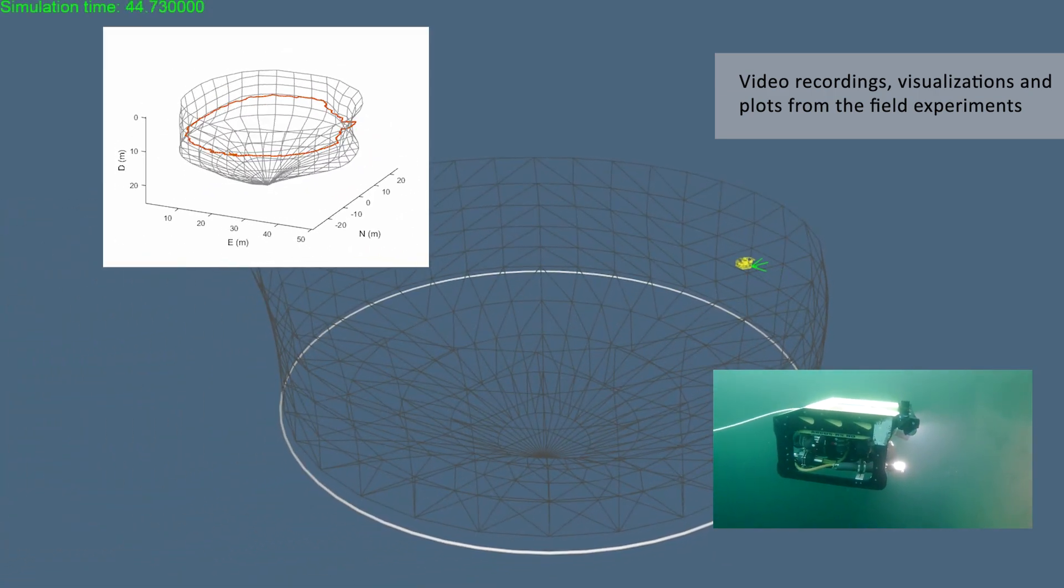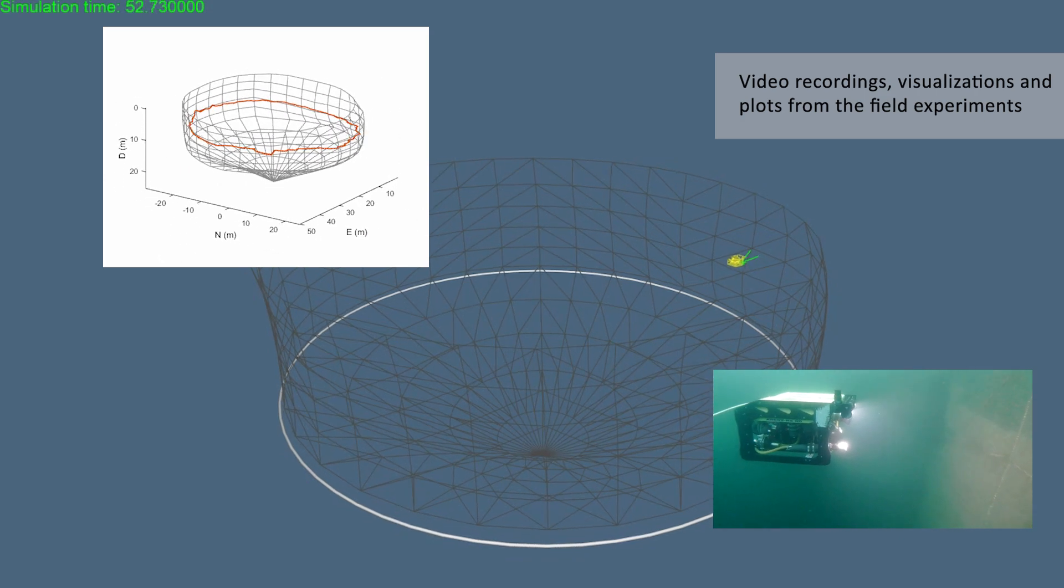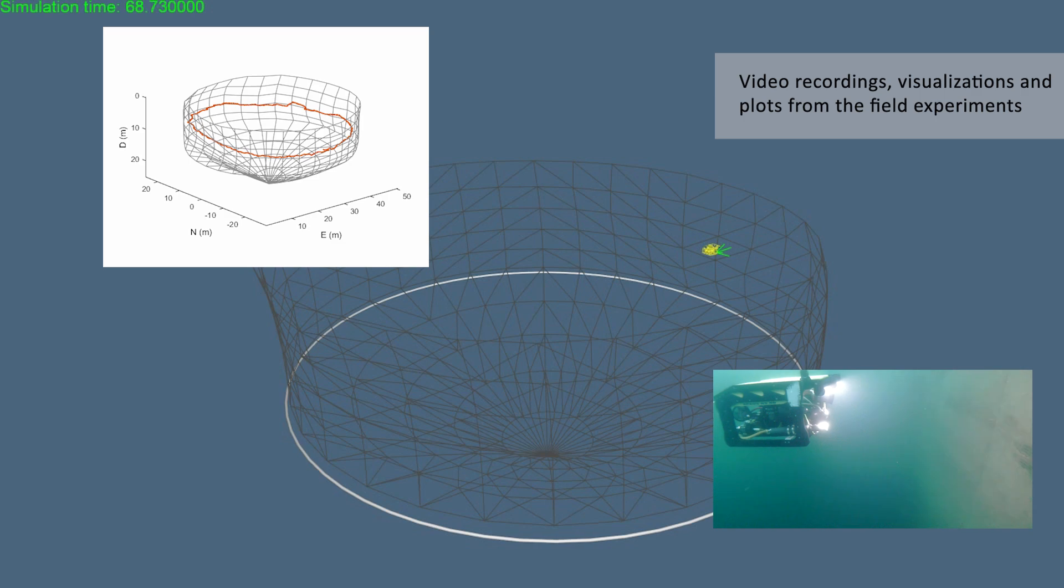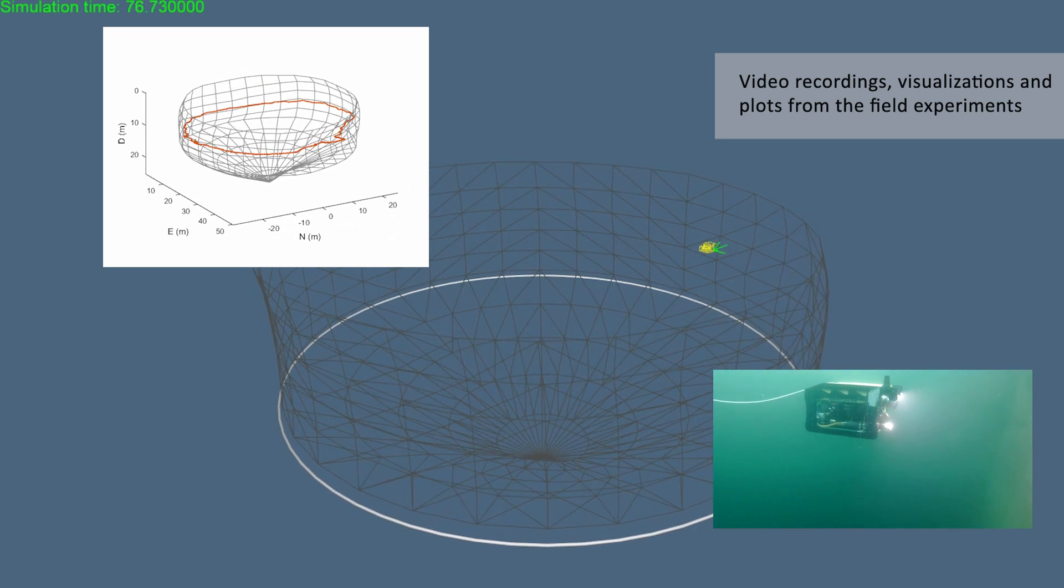The estimated shape suggested that the net pen was contracted along the east axis and prolonged along the north axis, which fits well with current measurements taken at the fish farm.